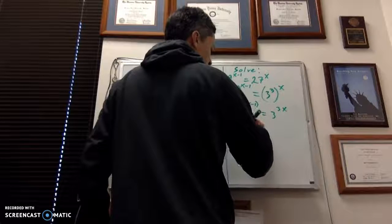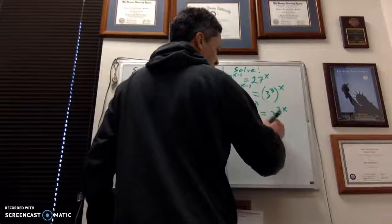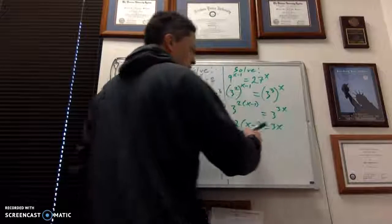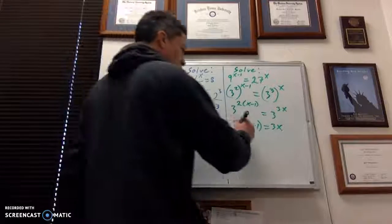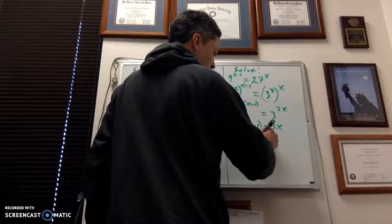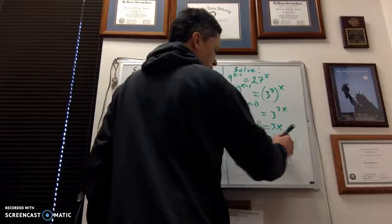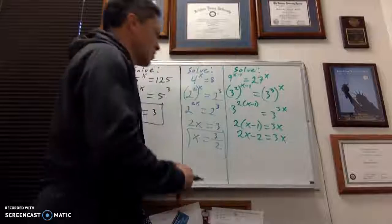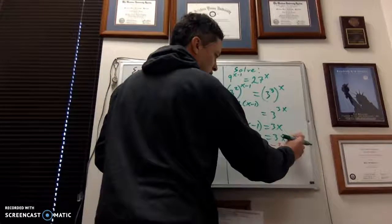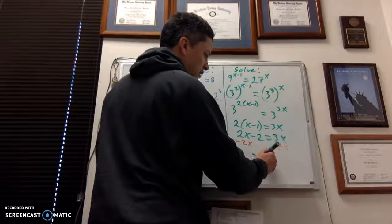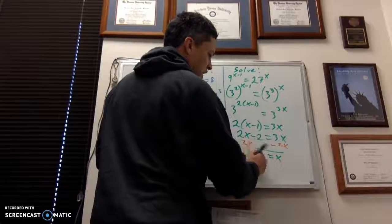So now I've got 2 times the quantity of x minus 1 equaling 3x, and now it's an easier equation to solve. I'll distribute the 2 through, 2x minus 2 equaling 3x. I'll subtract 2x to both sides, and there it is, negative 2 equals x.